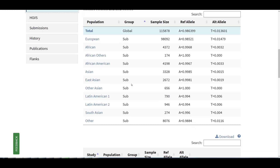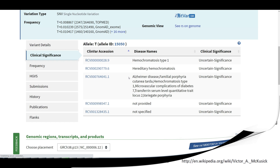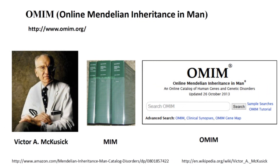OMIM, or Online Mendelian Inheritance in Man, is a database of all human diseases known to have a genetic component and their causal or risk genes. It was initially created in 1966 by Dr. Victor McKusick as a catalog of Mendelian traits and disorders in the form of a book named Mendelian Inheritance in Man (MIM). Two book editions of MIM were published. As the data grew larger and the book grew thicker, an online version, OMIM, was created in 1985 and made publicly available two years later.